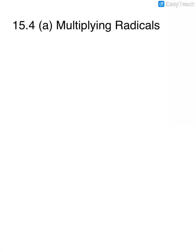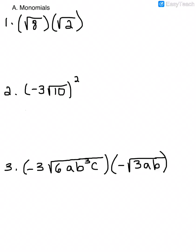This is 15.4 Part A, Multiplying Radicals. When we multiply radicals, we don't have to have like terms like we do when we're adding or subtracting radicals. Any number outside of the radical can be multiplied by another number outside of the radical, and any number under a radical can be multiplied by any other number under a radical.